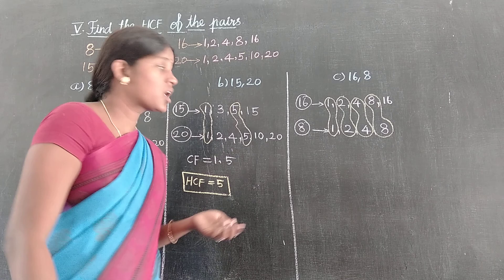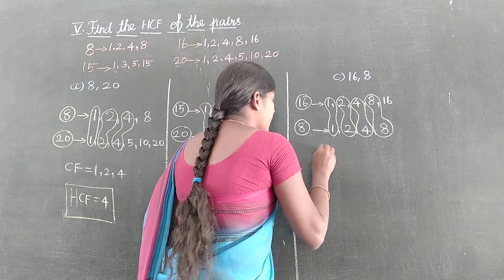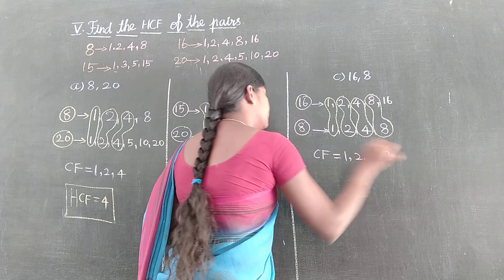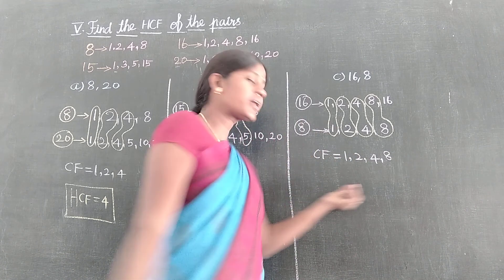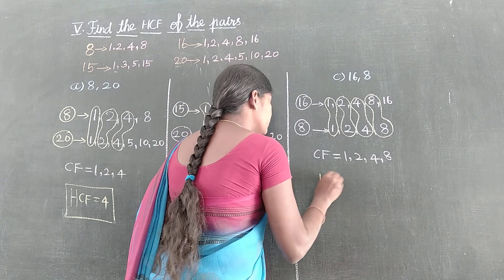So the common factors: 1, 2, 4, 8. Common factors CF equals 1, 2, 4, 8. How you start? 8. So HCF equals 8.